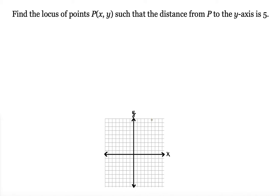This is going to be a vertical line parallel to the Y-axis, and also 5 units to the left — like this. So these are the respective equations: x is equal to 5 and x is equal to negative 5.